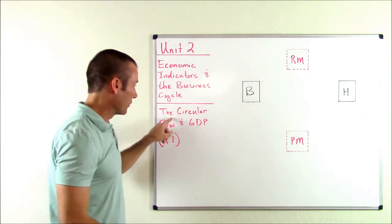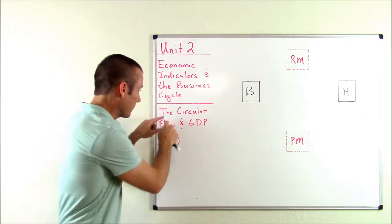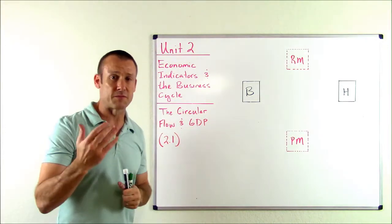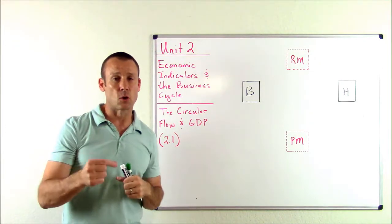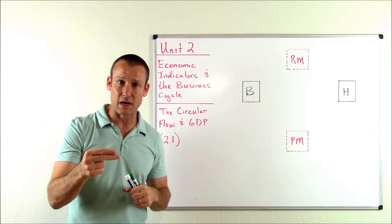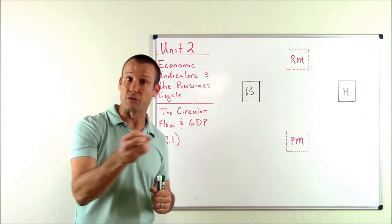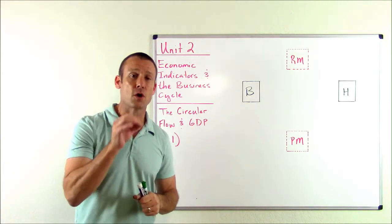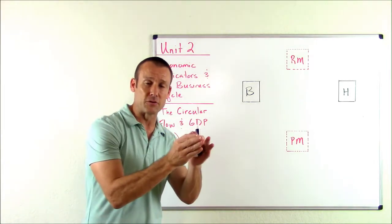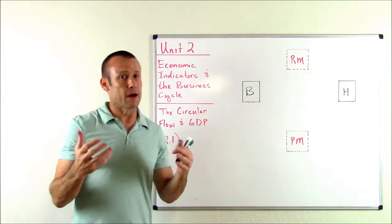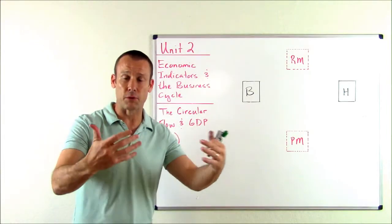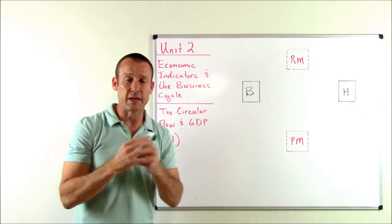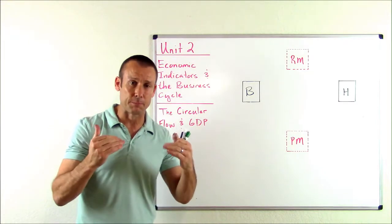Let's get to Subunit 2.1, the Circular Flow and GDP. First, guys, the circular flow is not the business cycle — that's what I've got over here. Now let's define GDP. What is GDP? It is the total amount of final goods and services produced within a country, within a specific time period, measured in monetary terms, i.e. measured in dollars. A simpler way to think about it: it's a measurement of the total output of goods and services in an economy.